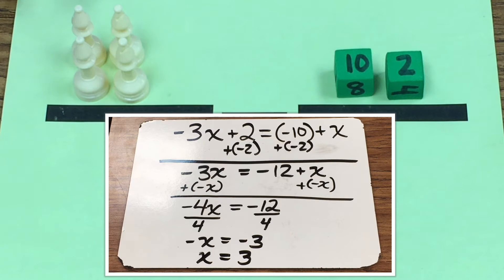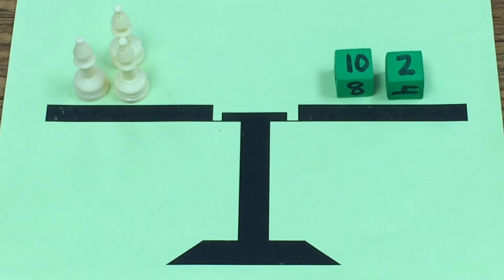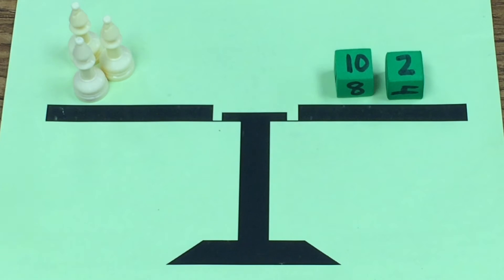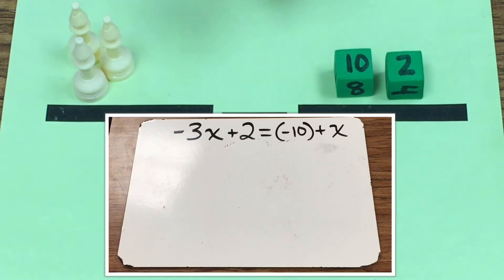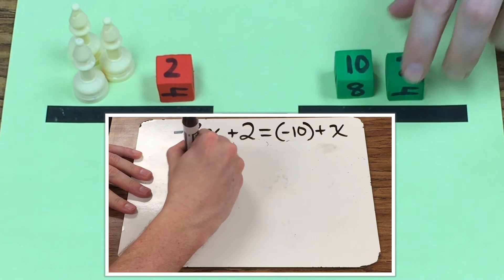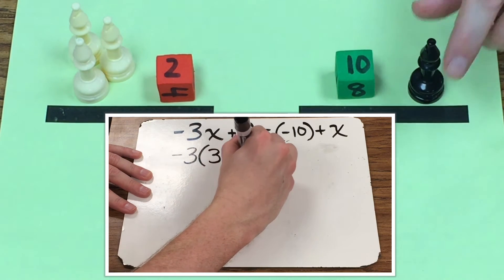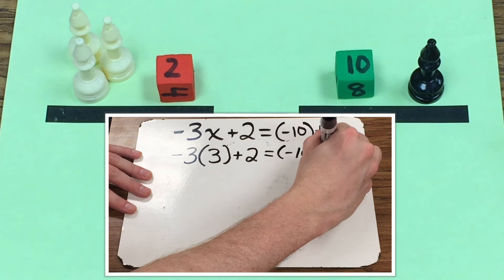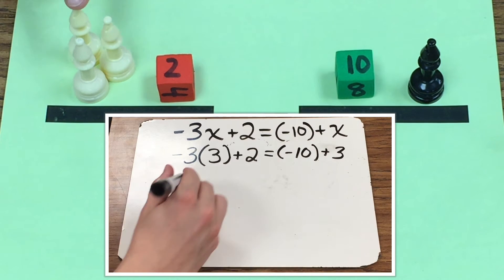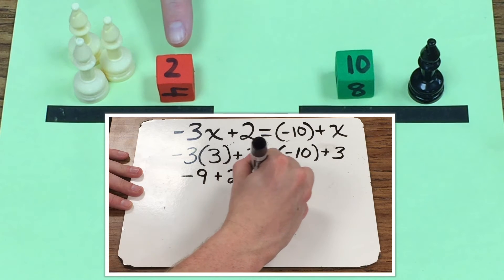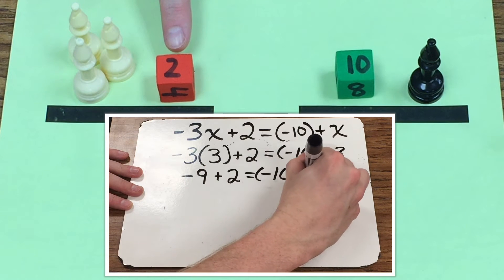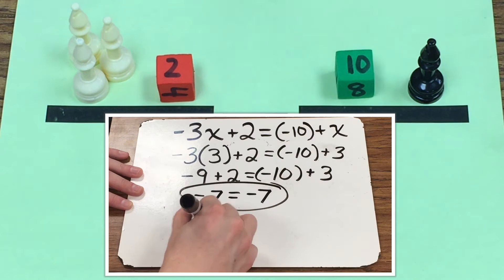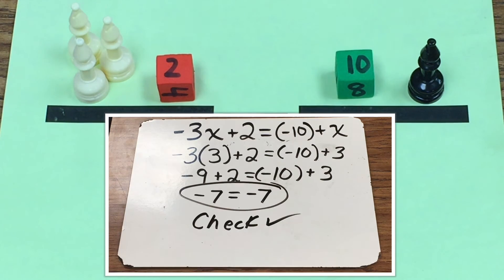The cool thing about hands-on equations is I can always check my answer. I'm going to set it back up the way it was. I have the opposite of 3x plus 2 equals the opposite of 10 plus x. These white pawns equal negative 3 and the black pawns equal positive 3. So: negative 3, negative 6, negative 9, plus positive 2 equals negative 7. Over here negative 10 plus positive 3 equals negative 7. So negative 7 equals negative 7 — we found the correct solution.